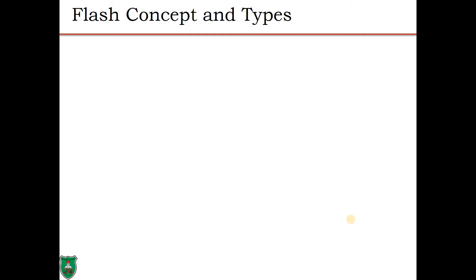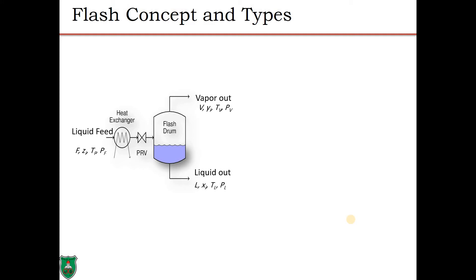Flash is how to separate two phases or more, but we are going to deal only with vapor-liquid equilibria in this case. This does not necessarily exclude other types of equilibria. For example, we might encounter vapor-liquid equilibria such as in the petroleum industry, where we have a liquid feed and would like to partially vaporize it, or we might have a vapor feed and want to partially condense it — ending up with a two-phase stream.